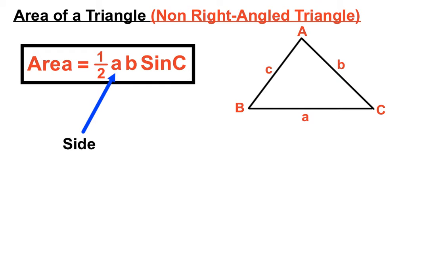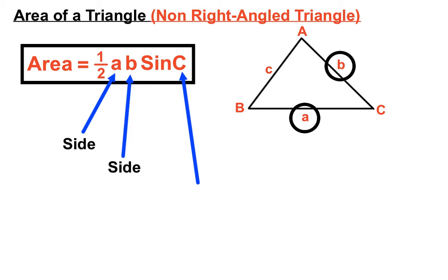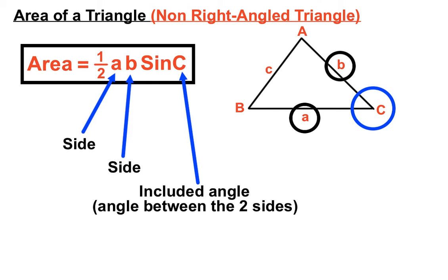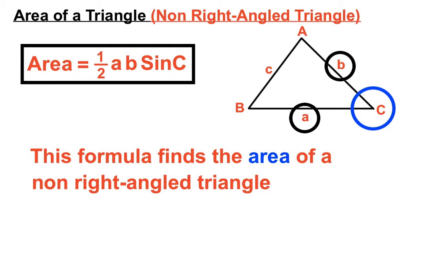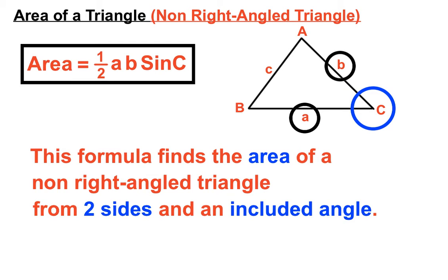So a and b are two sides — such as the ones circled — and the important thing about the angle c is that it needs to be what we call the included angle. It needs to be the angle that is between the two sides we're working with. So it needs to be two sides and the included angle for this formula to work properly. This formula finds the area of a non-right-angle triangle from two sides and an included angle.